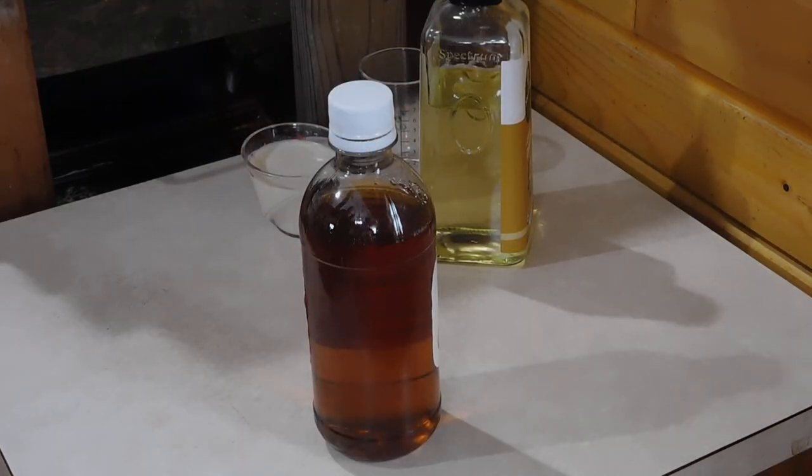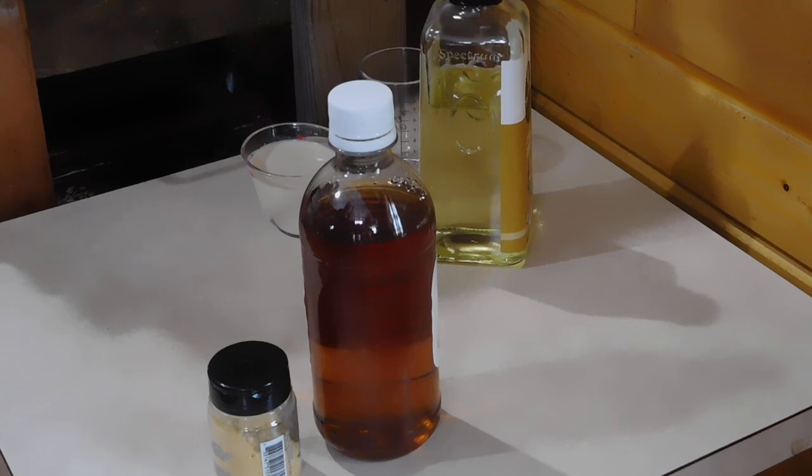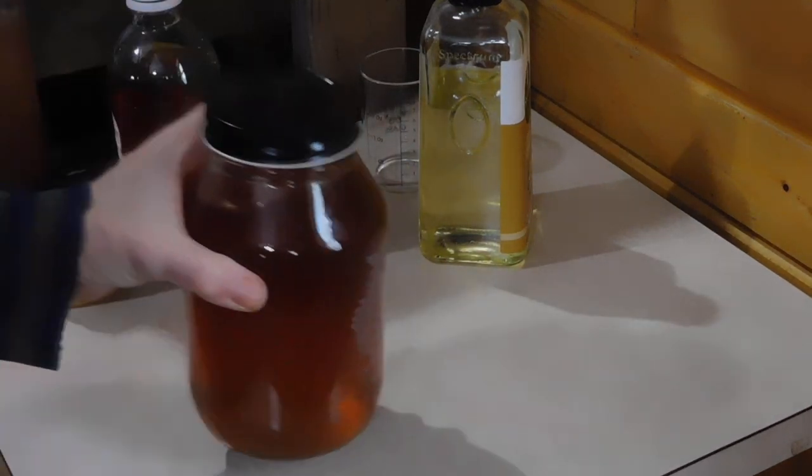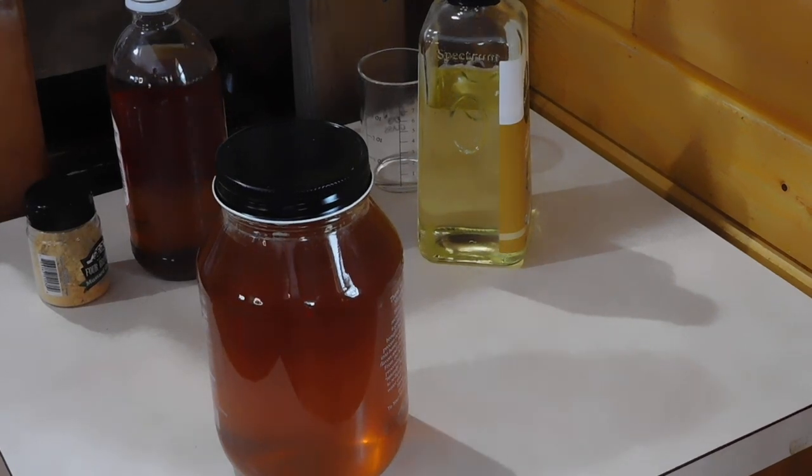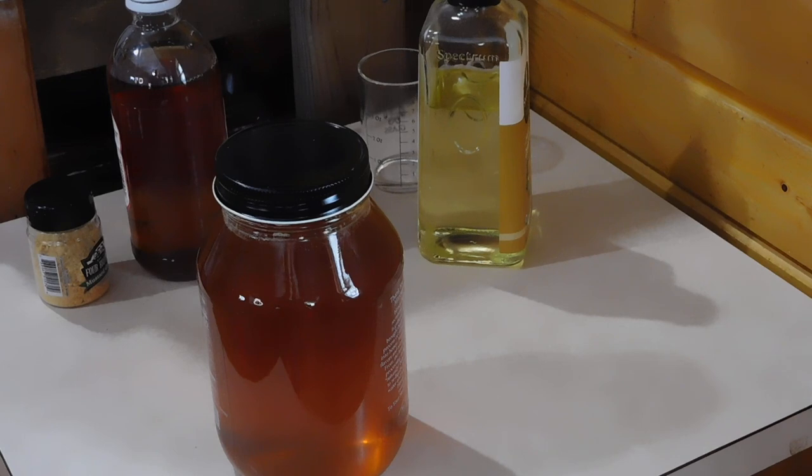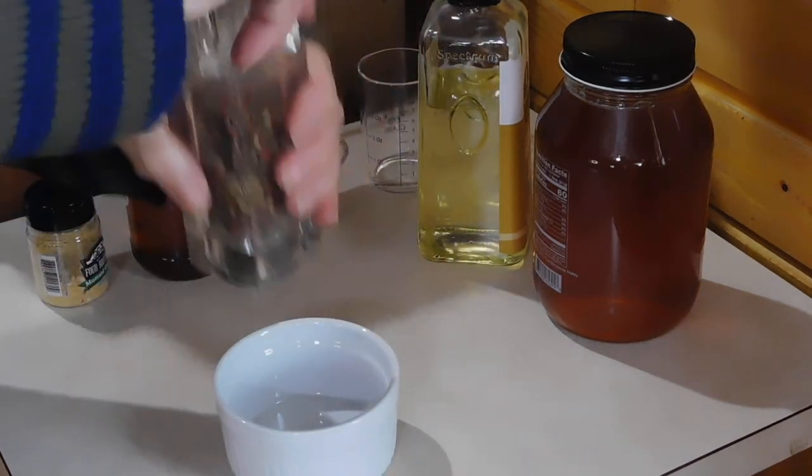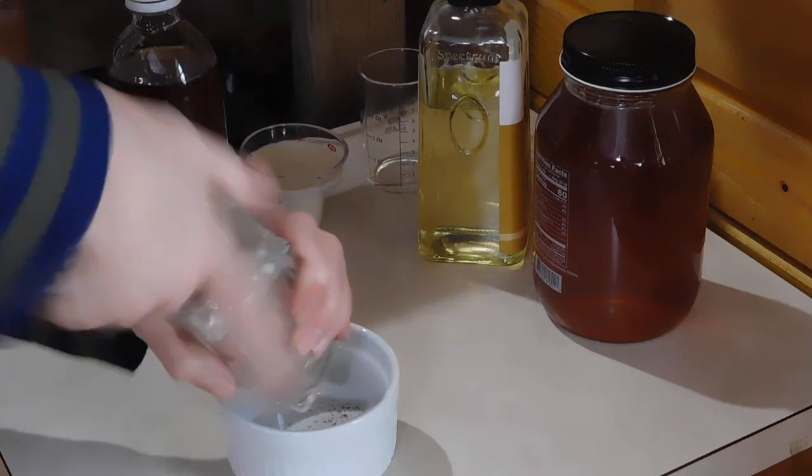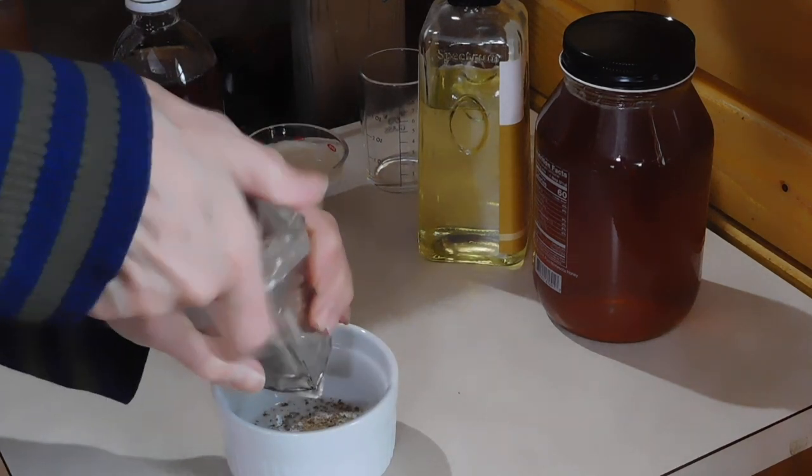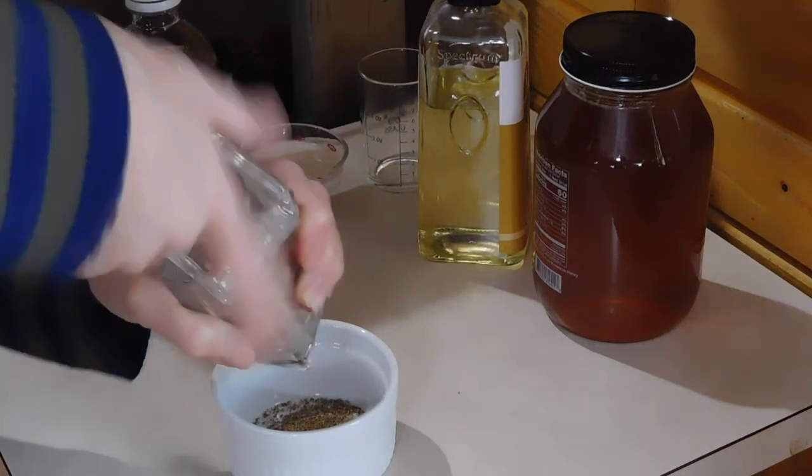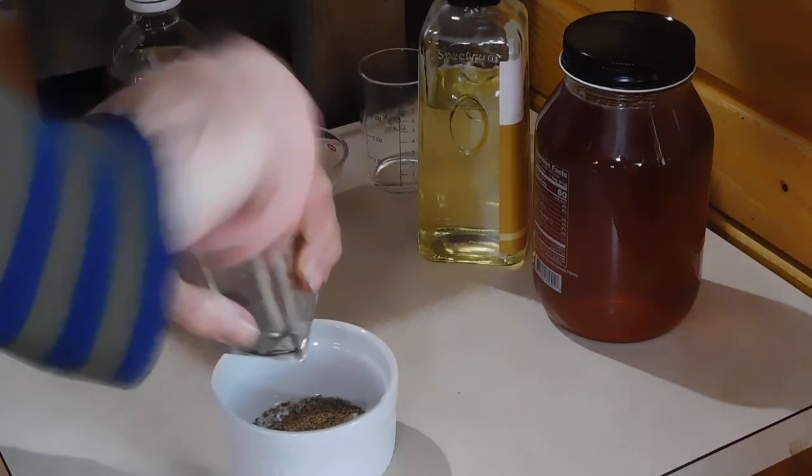Apple cider vinegar, ground mustard, and we need a little bit of a sweetener. I'm going to use honey. The recipe I'm using calls for a teaspoon of maple syrup and since honey is sweeter I'm going to use about a half teaspoon. And black pepper, we need about a half teaspoon of that. I'm just going to grind it right into this little container. Those are all of our ingredients and we are ready to go.